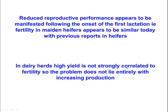To summarise: reduced reproductive performance in the high-producing dairy cow seems to be manifested following the onset of the first lactation. Fertility in maiden heifers appears to be similar today to what it was in previous reports. Although the trend to reduced reproductive performance is associated with an increase in milk yield, in Australian studies high yield is not strongly correlated to fertility. So the problem does not lie entirely with increasing production — you can't simply say that a cow producing 45 litres will have worse fertility than one producing 25 litres. There are other factors involved.